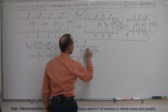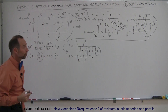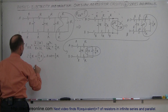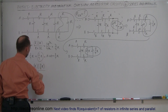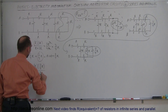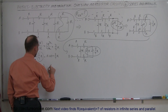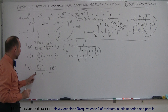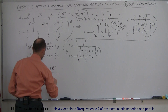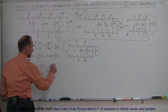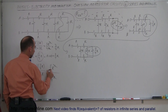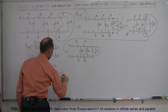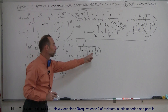Now we want to combine those two, and those two are in parallel — so again we use the product over the sum. The R equivalent for those two is equal to R times 11/4 R divided by R plus 11/4 R. This would be 11/4 R² divided by — a single R is 4/4 — so 4/4 plus 11/4 is 15/4 R. The R² cancels out the R and 1/4 cancels 1/4, leaving us with 11/15 R.